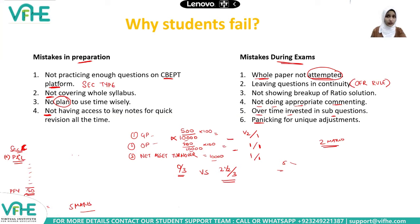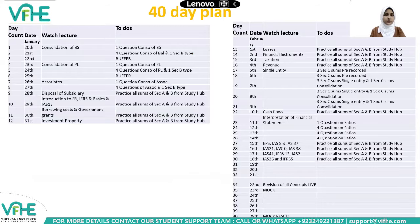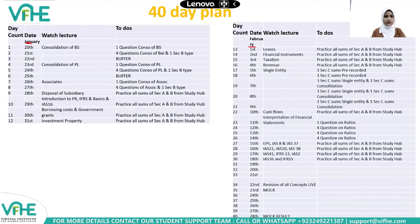So these are the things to remember so you don't fail this quarter and pass in the first attempt. If you didn't pass the first time, don't repeat these mistakes. Regarding cheat sheets — if you enroll in the Wiffy course, here's a sample screenshot showing how I've shrunk the Revenue standard to just one page. Like that, many other topics are condensed to one-page notes. Now let's look at the 40-day plan. Your exam is on 4th March. I'm counting 40 usable days, not the last three days before the exam.